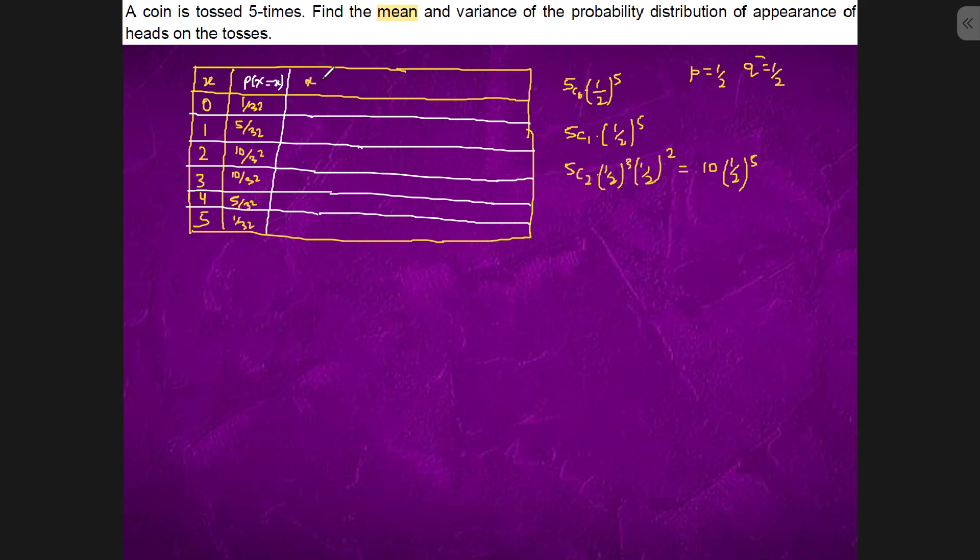So, X times P(X) is what we will get here. This is 0, this is 5 by 32, this is 20 by 32, this is 30 by 32, this is 20 by 32, this is 5 by 32.